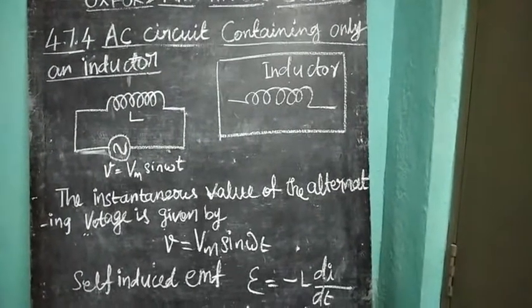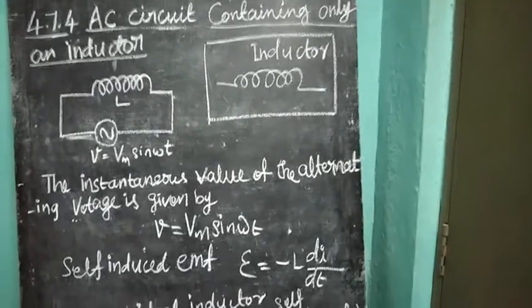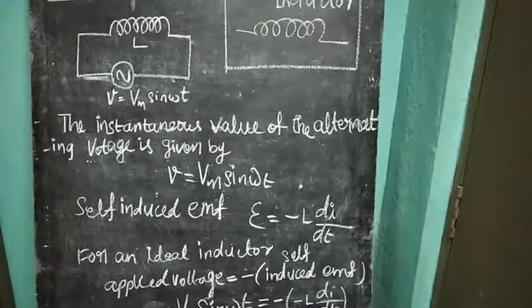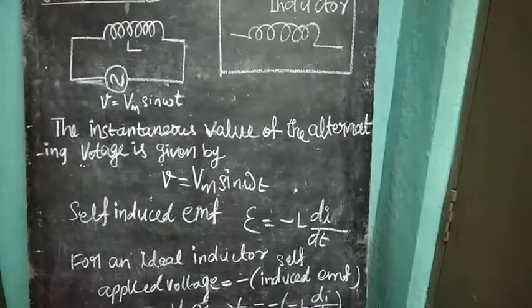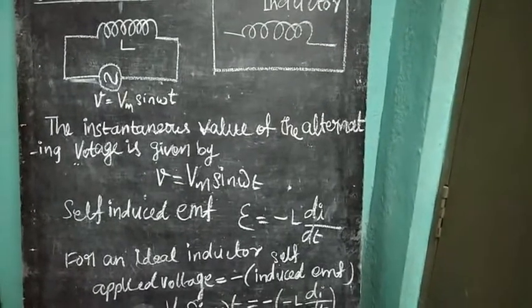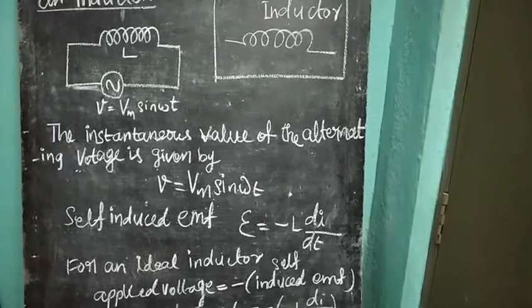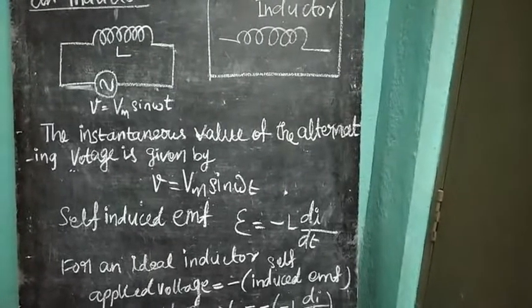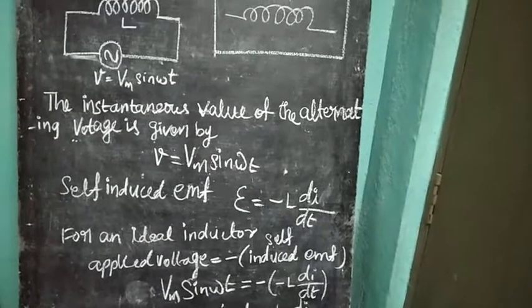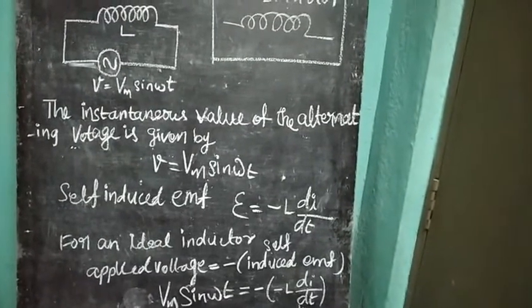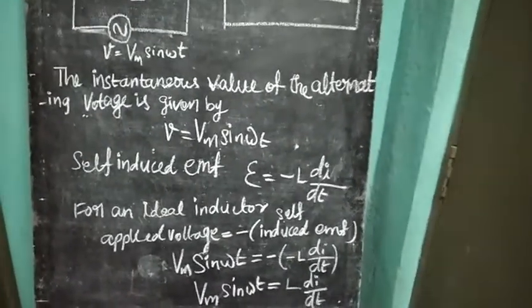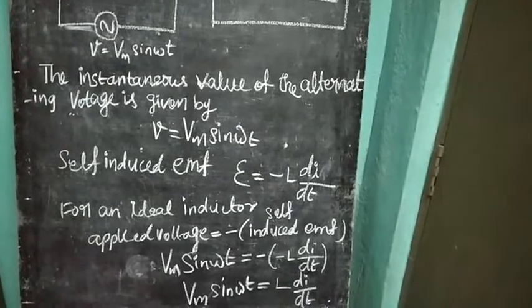In this equation, L represents the coefficient of self-inductance. For an ideal inductor, the applied voltage equals the opposite of the self-induced EMF. Substituting the alternating voltage into this equation, we obtain Vm sin omega t equal to L di by dt.